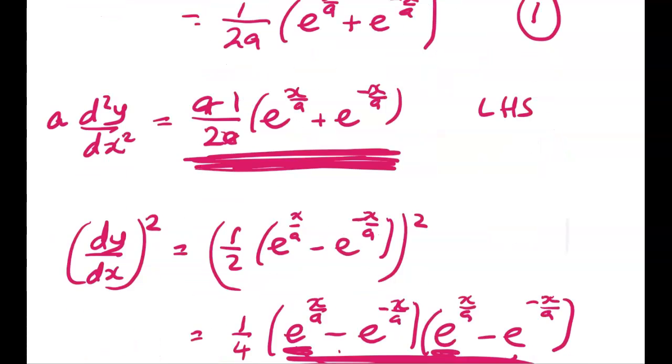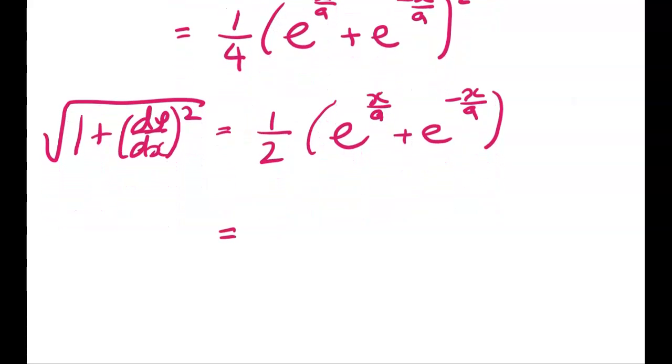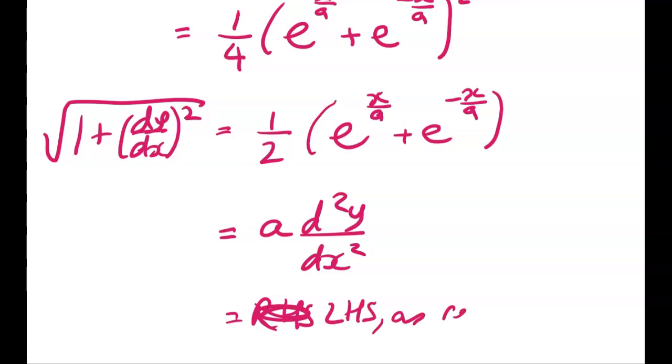So now all I have to do to finish off, we've ended up down to one half of that. And so that is equal to a times d squared y by dx squared. Sorry, which is equal to the left hand side, as required. So there you go.